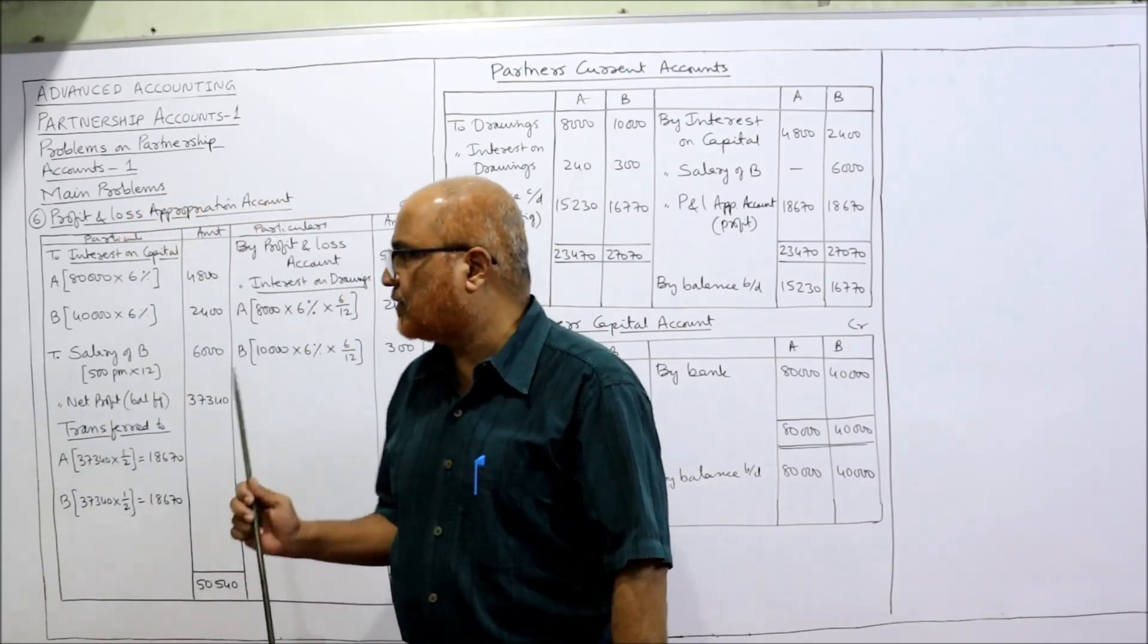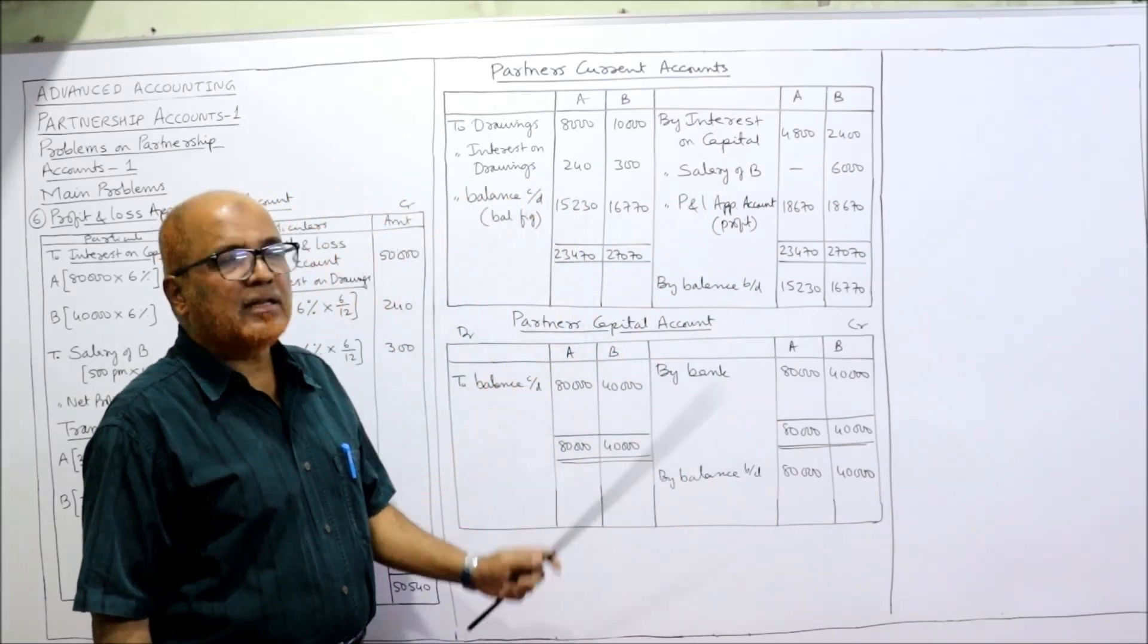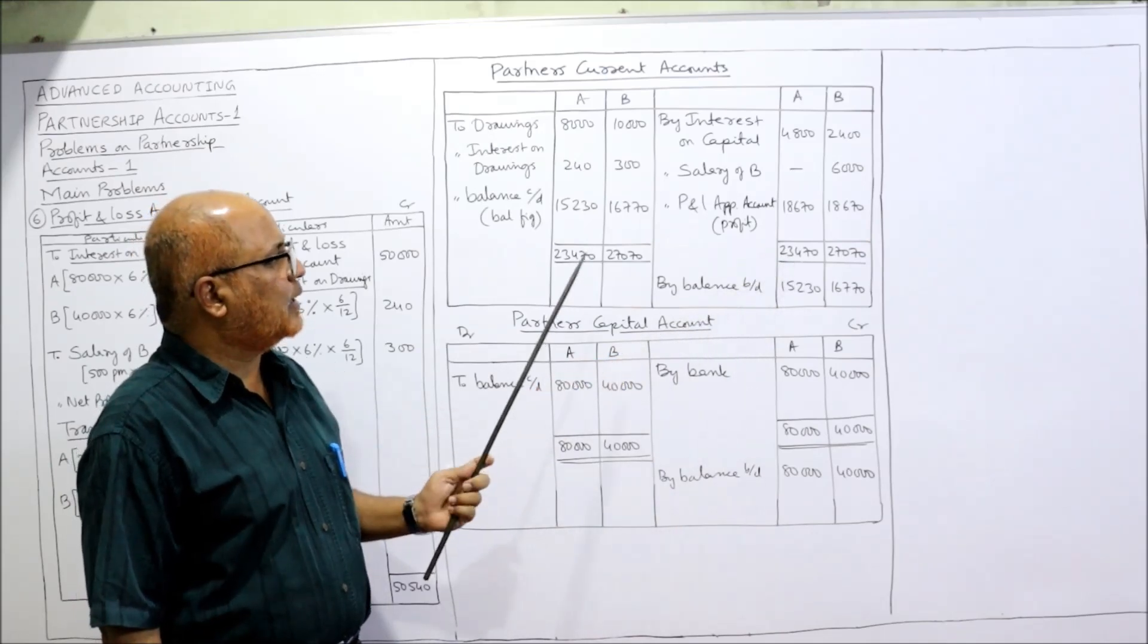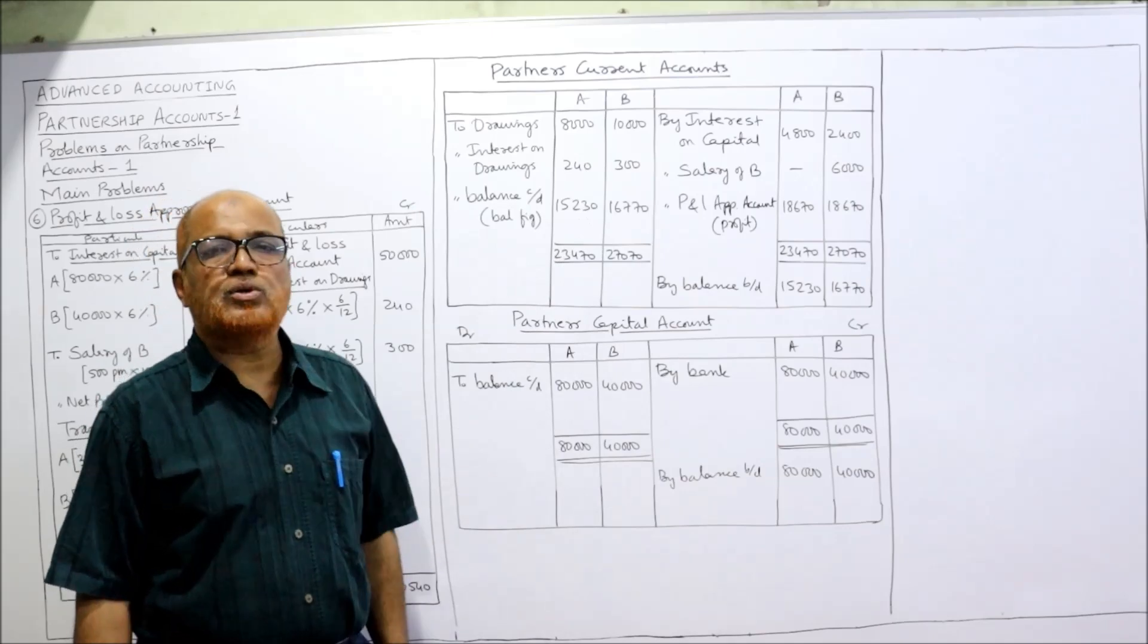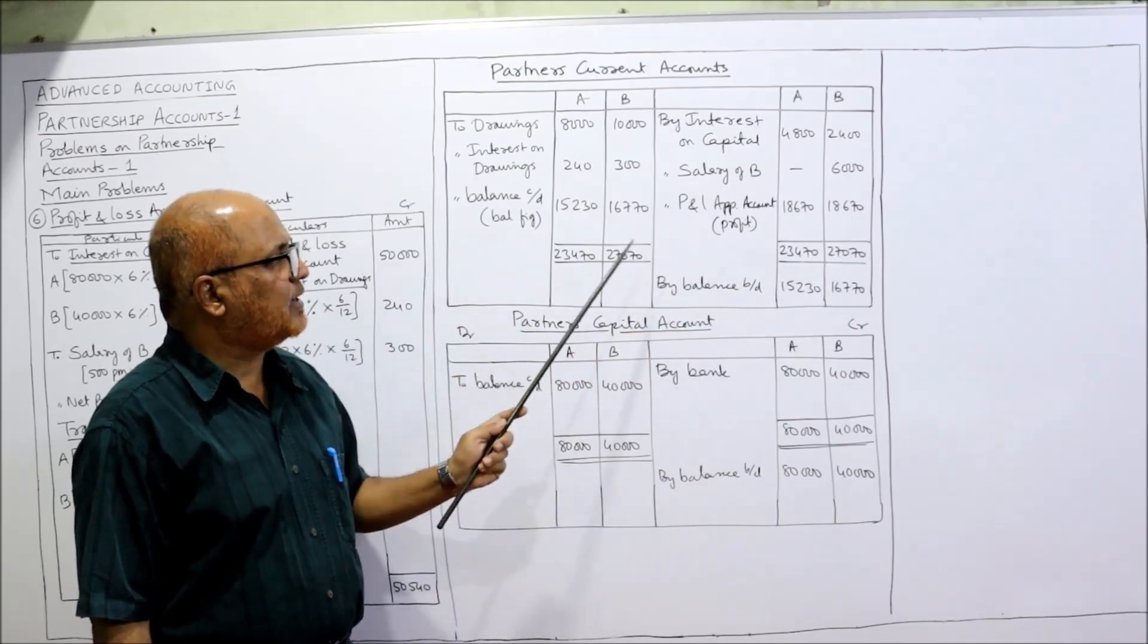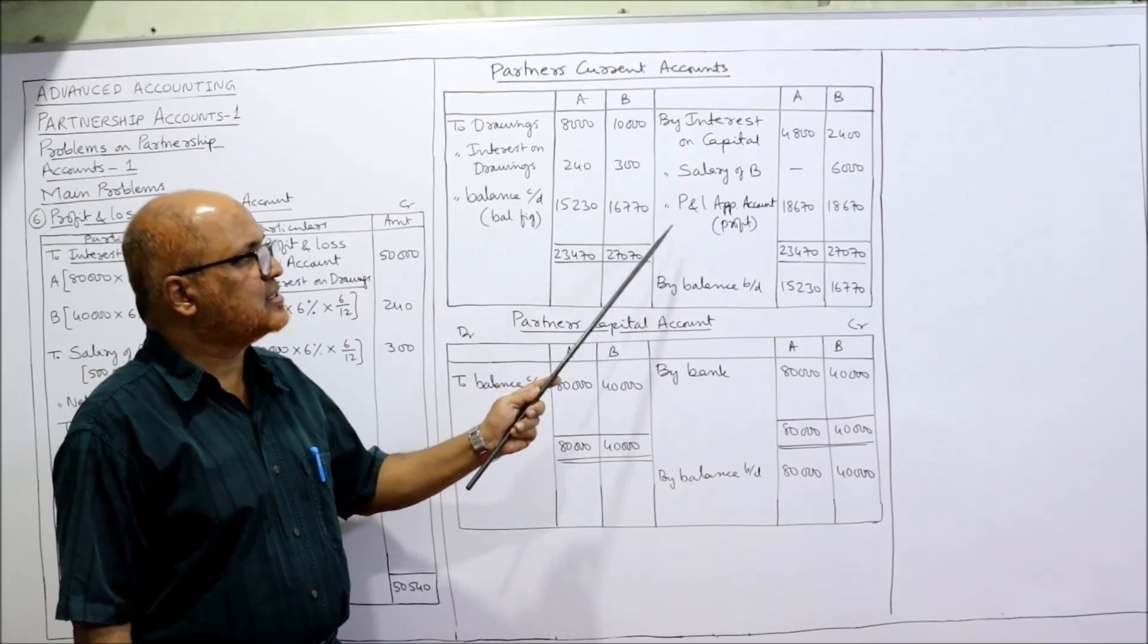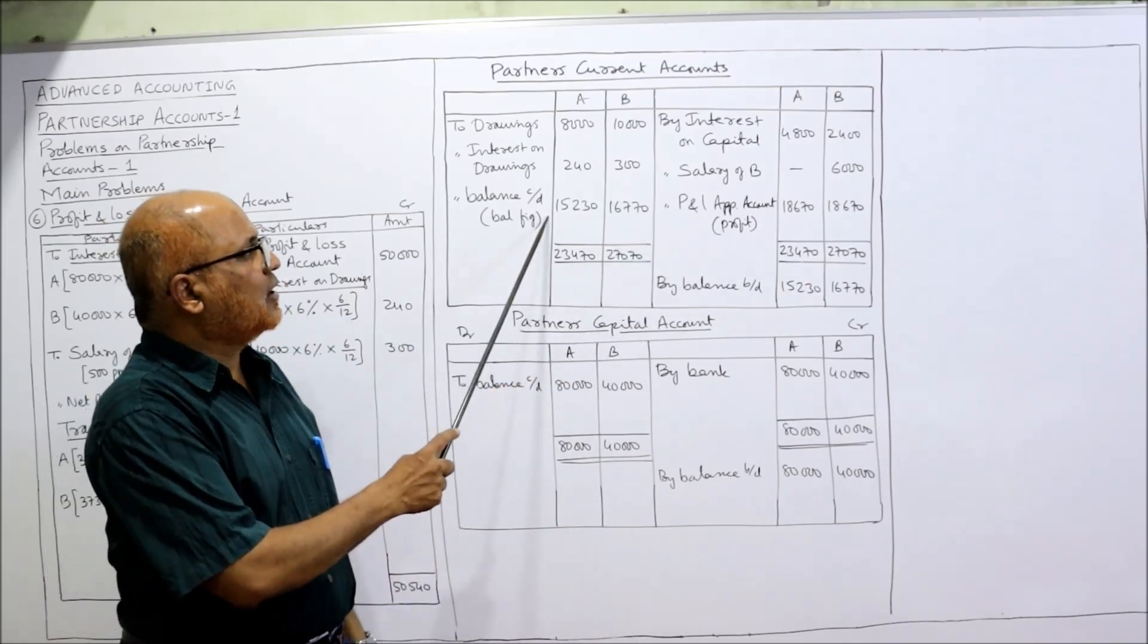So debit side: drawings and interest on drawings. Drawings are 8,000 by A, 10,000 by B, and interest on drawings 240 and 300. Here we have calculated 240 and 300. Now we find the balancing figure. Take the total on the credit side: 23,470 minus 8,000 minus 240 equals 15,230, which is the closing current account balance of A. Similarly, total of B is 27,070 minus 10,000 minus 300 equals 16,770, the closing balance of current account of B.